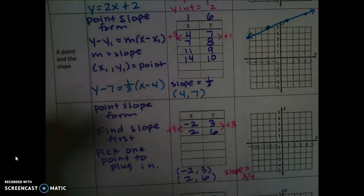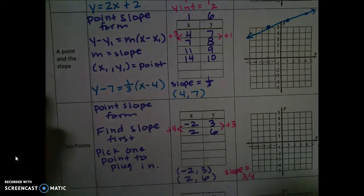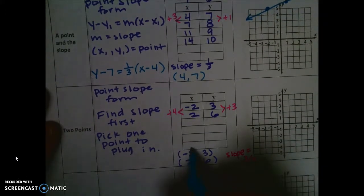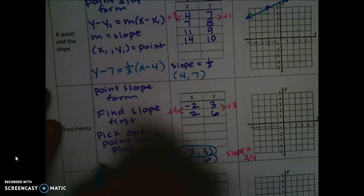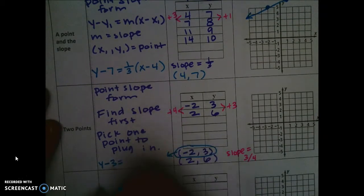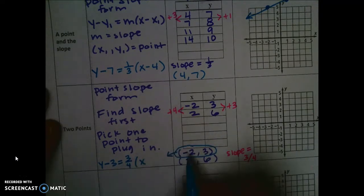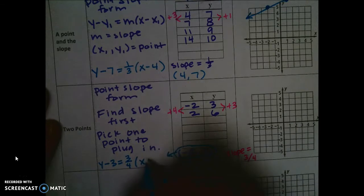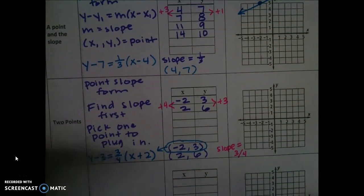So when I put that into the equation, I'm just going to pick one of the two points. It doesn't matter which one. I'm going to pick the negative one so I can show you what happens with that when you put it into the equation. So y minus 3 equals 3 fourths, and then in parentheses, x minus negative 2 is the same thing as x plus 2. So I'm going to write x plus 2 because it's more simplified.